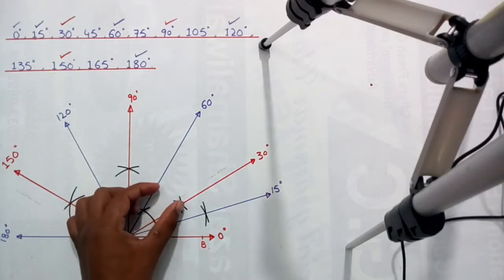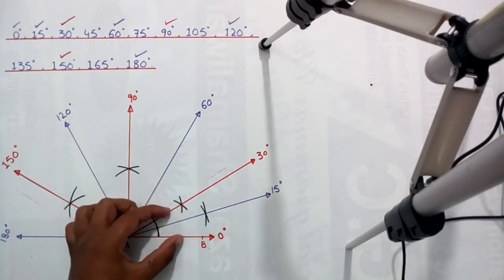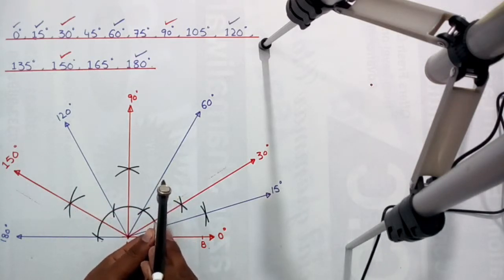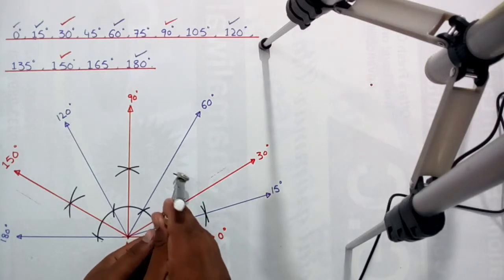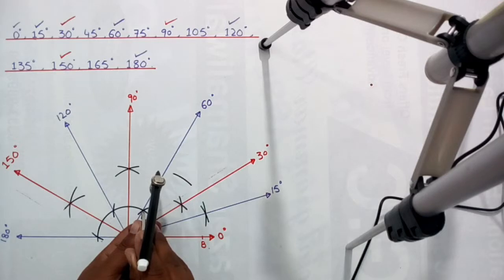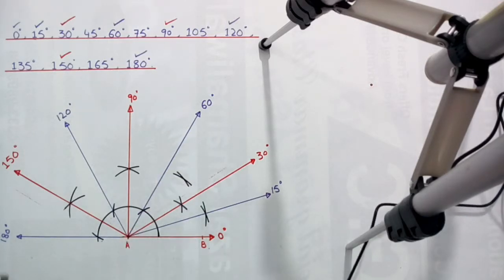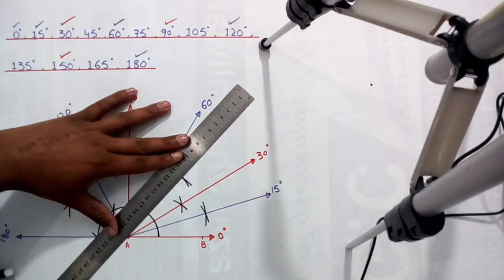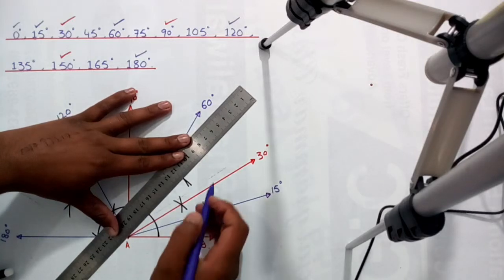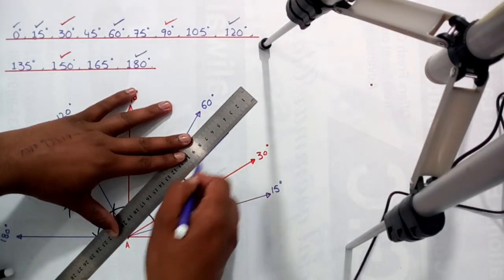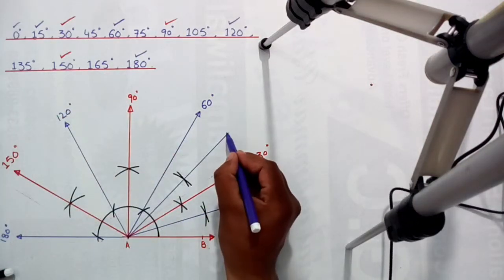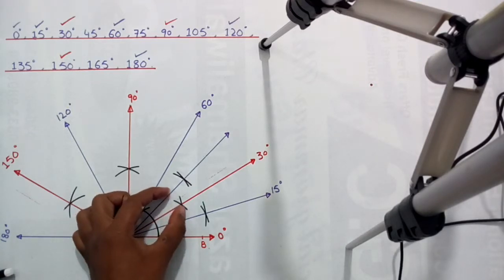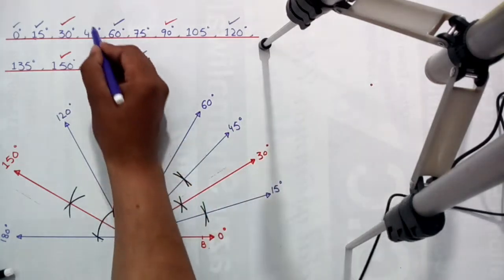To find the 45 degree angle, divide this angle into two equal parts — 30 plus 15 equals 45 degrees. Put the needle on this point and draw an arc, then put the needle on the next point and draw a second arc. Join point A with this point and draw a line — 30 plus 15 equals 45 degrees.